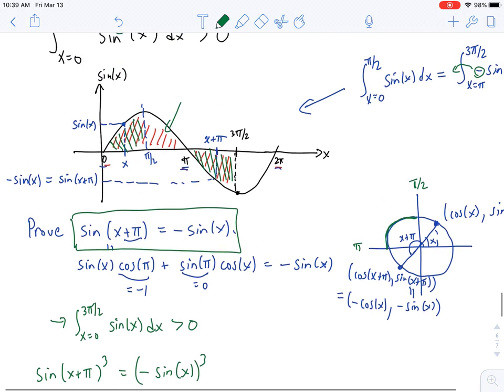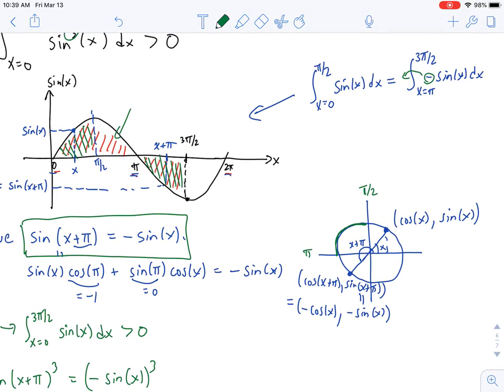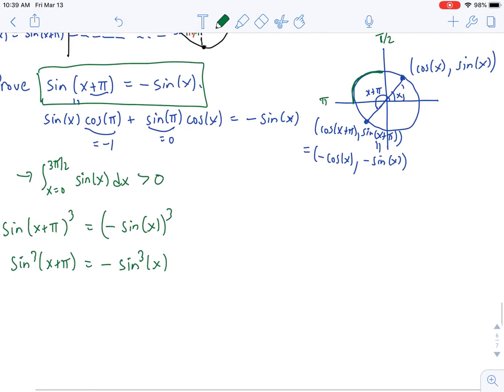And so once again, we can conclude that if you integrate from 0 to π over 2 and from π to 3π over 2, you're going to get the exact same value, not with sine, but actually with sine cubed. And so the remaining area between π over 2 and π for the graph of sine cubed, which again, because sine is positive on that interval, so will sine cubed, you're going to get some positive value. And so we're going to be able to conclude that between 0 and 3π over 2, sine cubed has positive accumulation.